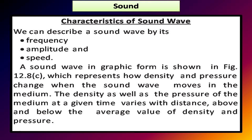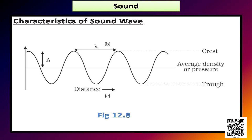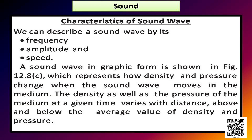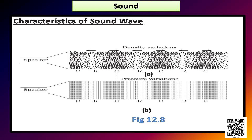Let us now discuss characteristics of a sound wave. We can describe a sound wave by its frequency, amplitude, and speed. A sound wave in graphic form is shown in figure 12.8c of your book, which represents how density and pressure change when the sound wave moves in the medium. Figures 12.8a and 12.8b represent the density and pressure variations respectively as a sound wave propagates in the medium.